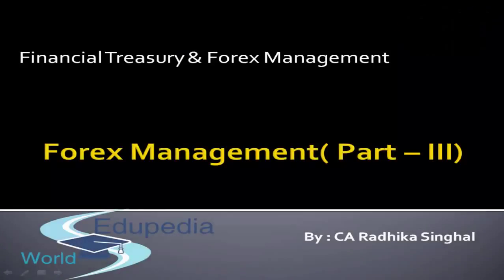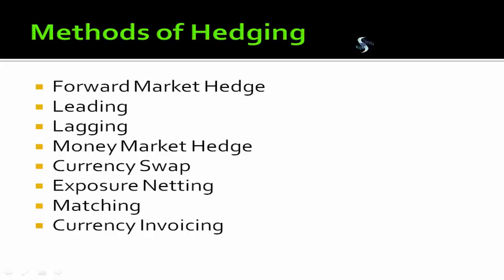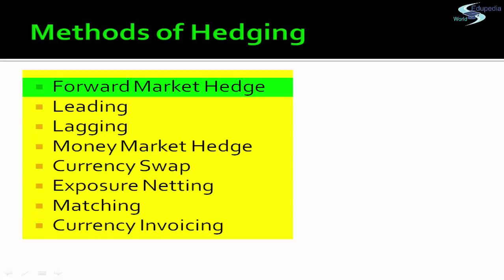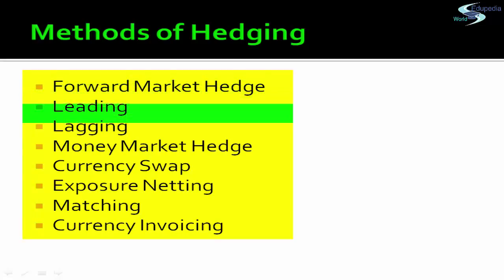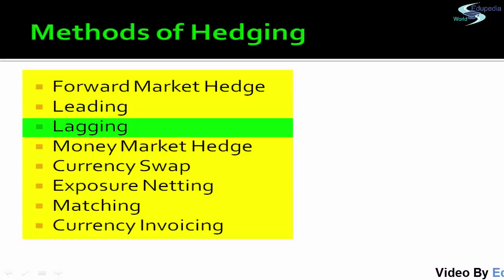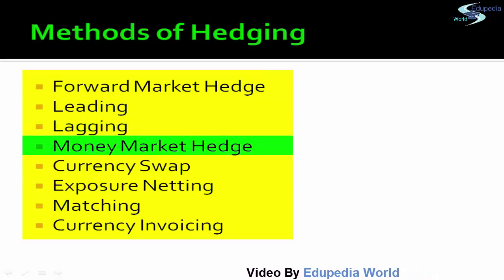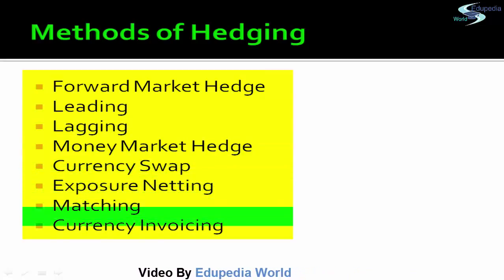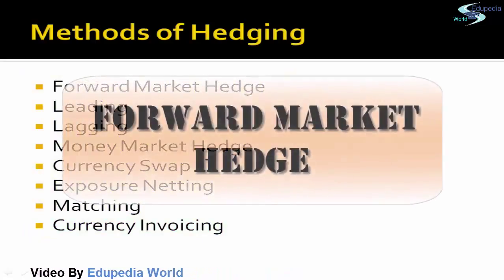Hi everyone, welcome to Edupedia World. I am CA Radhika Sangam. In the last sessions we discussed why fluctuation risk occurs and the different types of risk. In today's class we are going to discuss how to hedge against this risk — how importers and exporters use different hedging methods to safeguard against foreign exchange loss. The various methods include: forward market hedge, leading, lagging, money market hedge, currency swap, exposure netting, matching, and currency invoicing. We will discuss all these methods one by one, starting with forward market hedge.